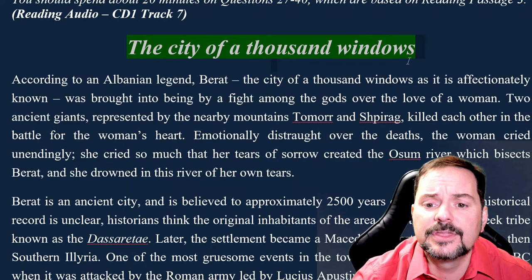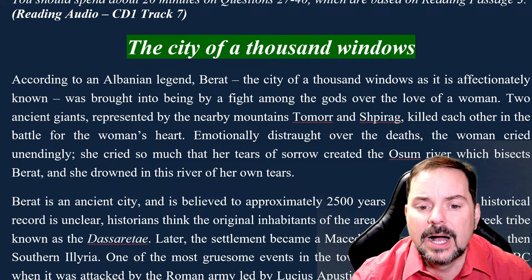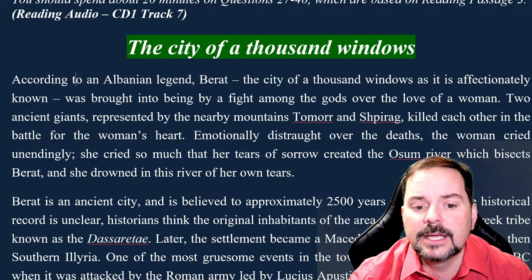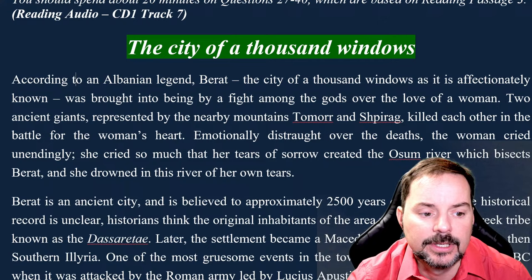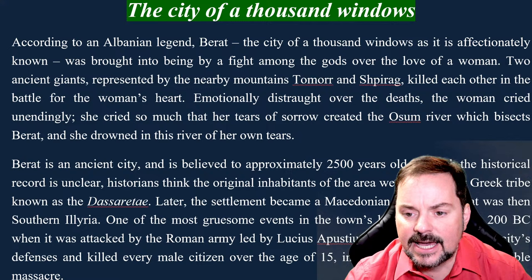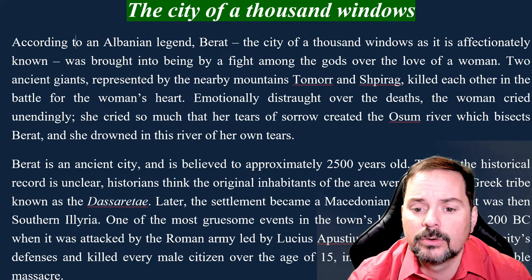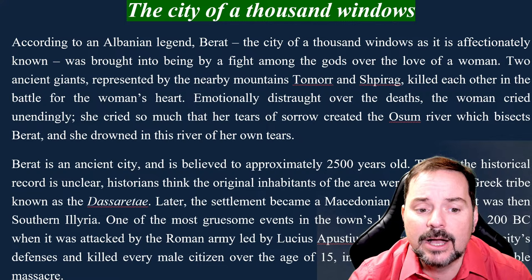The city of a thousand windows. According to an Albanian legend, Barat — the city of a thousand windows as it is affectionately known — was brought into being by a fight among the gods over the love of a woman. Two ancient giants, represented by the nearby mountains Tomor and Shparag, killed each other in the battle for the woman's heart. Emotionally distraught over the deaths, the woman cried unendingly. She cried so much that her tears of sorrow created the Osum river, which bisects Barat, and she drowned in this river of her own tears.